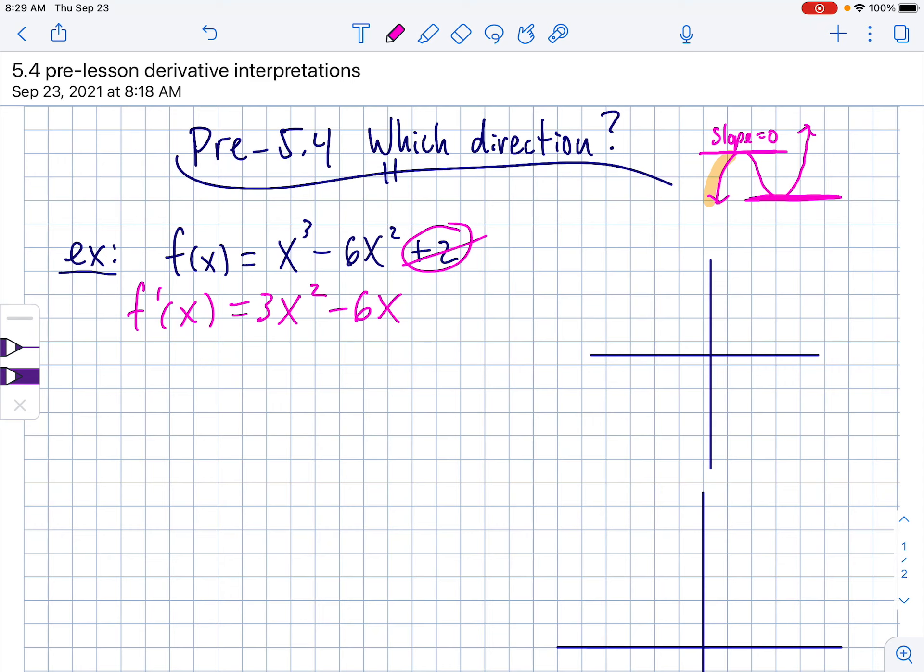Now, with this picture I've drawn, that happens in two different places, here and here. So, if I take the derivative and set it equal to 0, I can figure out where those horizontal tangent spots are, which are like the tops of mountains and the bottoms of valleys on a graph or roller coaster, whatever.